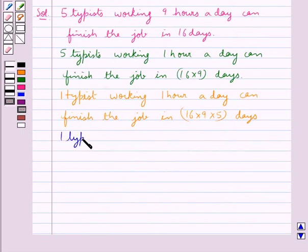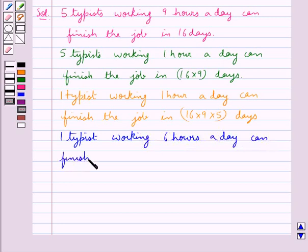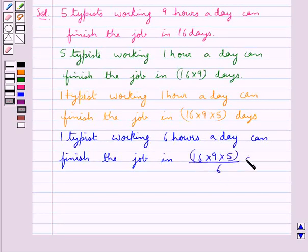Next we have 1 typist working 6 hours a day can finish the job in 16 into 9 into 5 upon 6 days. More the number of hours, less would be the number of days taken to complete the job.